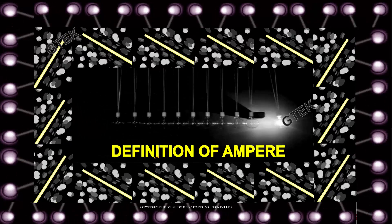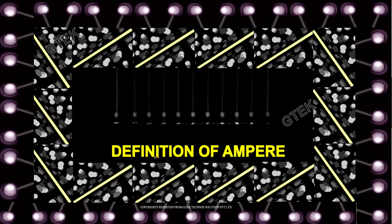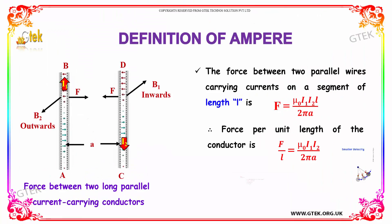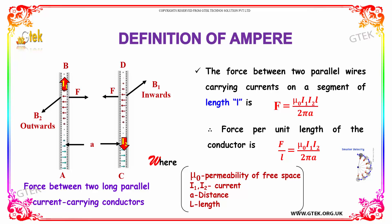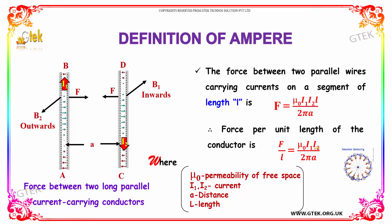Now let's talk about the definition of ampere. The force between two parallel wires carrying current on a segment of length L is given by F equal to μ₀ into I1 into I2 into L by 2πA. So, force per unit length of the conductor is given by F by L equal to μ₀ into I1 into I2 by 2πA.